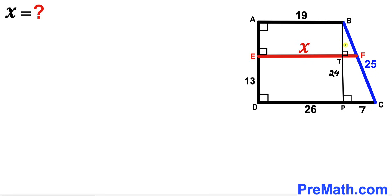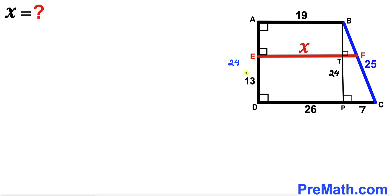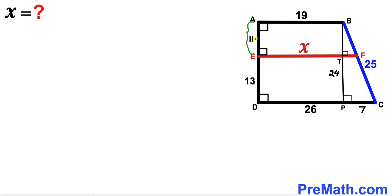We can observe that angle BTF is also a 90-degree angle. Furthermore, side AD is equal to side BP, and since BP is 24, AD is also 24 units. We also know segment ED is 13, so the remaining segment AE is going to be 24 minus 13, which gives us 11 units.